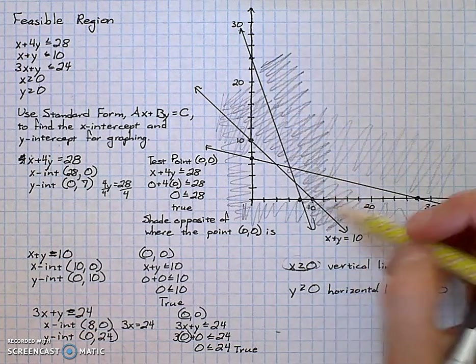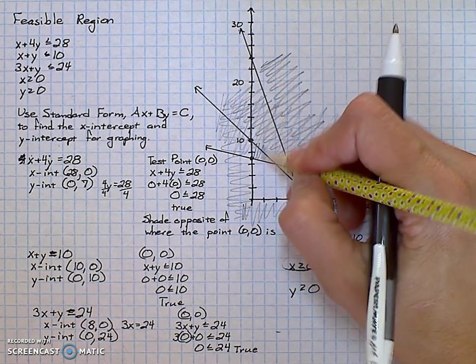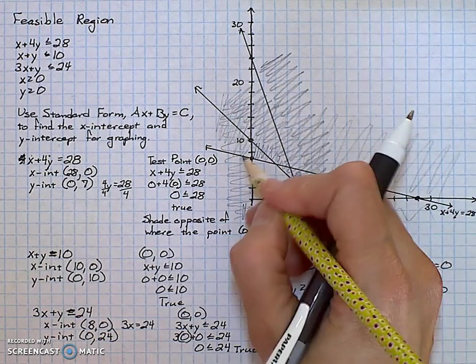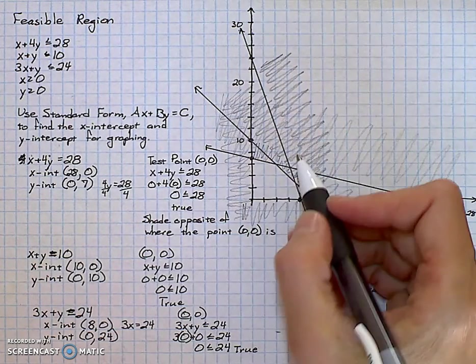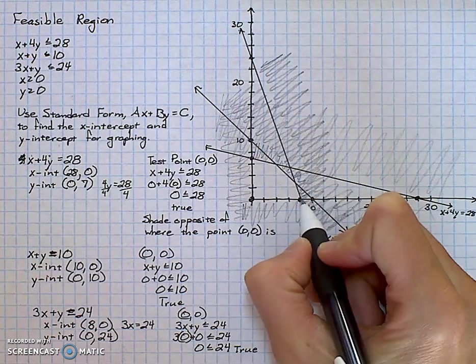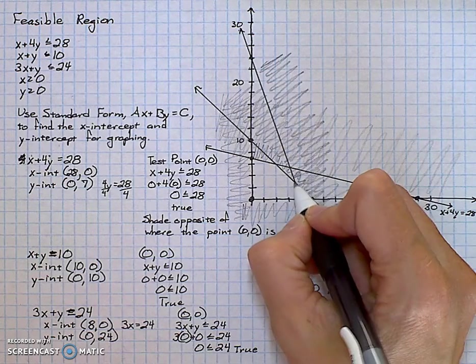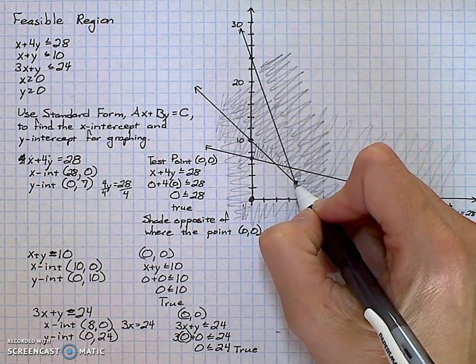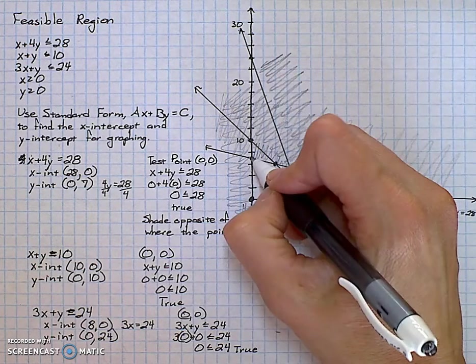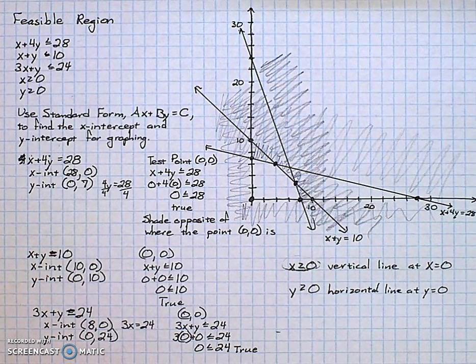Now the feasible region happens to be the white space that's left. So you can see all of the shaded region around here. If we've been careful with our shading, we can see that feasible region has the corner 0, 0, has the corner at 8 on the x-axis, has a point here that would have to be determined in a different problem, another point, and the point at 7 on the y-axis. That is how you graph the feasible region when you're doing it by hand.